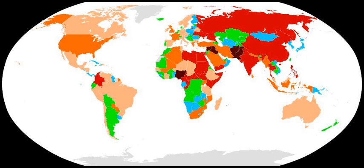Over the same period, the number of countries that experienced more than 50 deaths rose from 15 to 24, highlighting that not only was the intensity of terrorism increasing, its breadth was increasing as well. The countries most heavily affected by terrorism in 2013 were Iraq, Afghanistan, Pakistan, Nigeria, and Syria. Four terrorist groups — ISIL, Boko Haram, the Taliban, and Al-Qaeda — claimed 66% of deaths in 2013. Among OECD countries, Turkey and Mexico reported the highest deaths in 2013, losing 57 and 40 lives respectively. Since 2000, 7% of all terrorist incidents occurred in OECD countries.